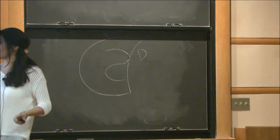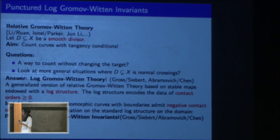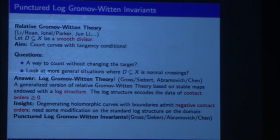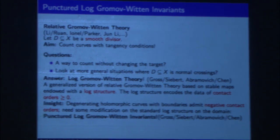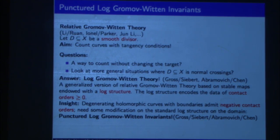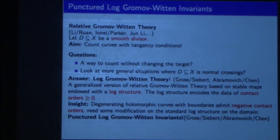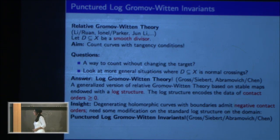And in standard log Gromov-Witten theory, these turn out to be always positive. But a recent insight is if you want to study degenerating holomorphic curves with boundaries, then you need to allow some more generalized theory and allow negative contact orders. And thus, this group of all these four people came together and the four are writing a paper now called punctured log Gromov-Witten invariants, which should appear soon. And these are the more generalized versions of relative Gromov-Witten invariants that are interesting for symplectic homology as well as some more constructions.